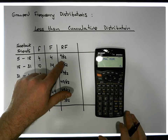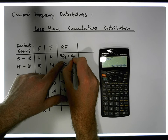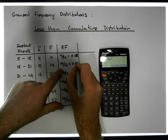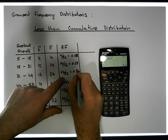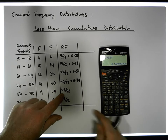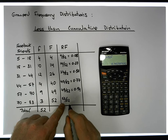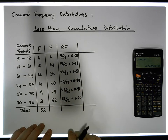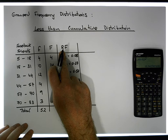Using a calculator to convert these fractions to decimals: 4 divided by 52 gives approximately 0.08. 14 divided by 52 is about 0.27. 26 divided by 52 equals 0.50. 40 divided by 52 gives 0.77. 49 divided by 52 gives 0.94. And 52 divided by 52 is 1.00. These are the relative less than cumulative frequencies — cumulative frequencies based on the less than cumulative frequency column.